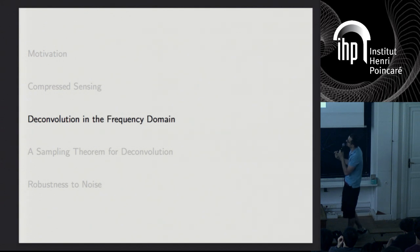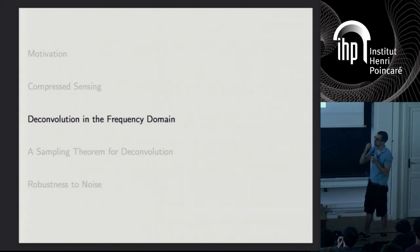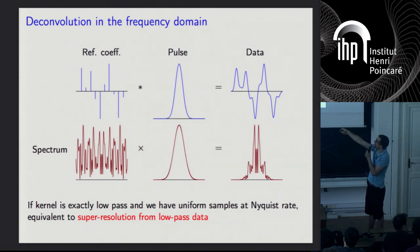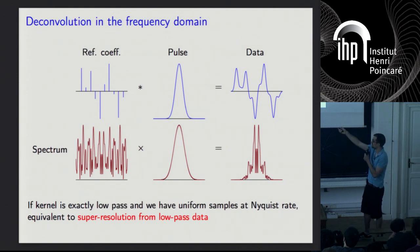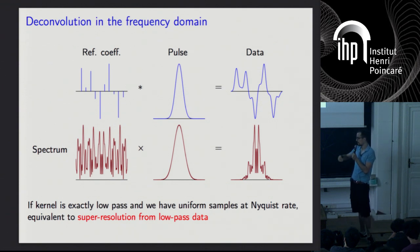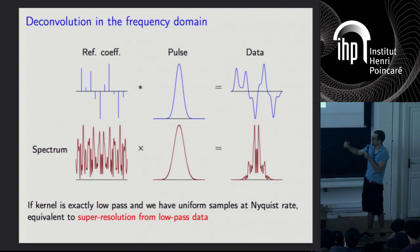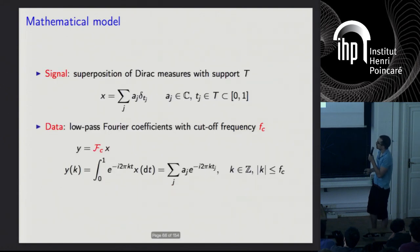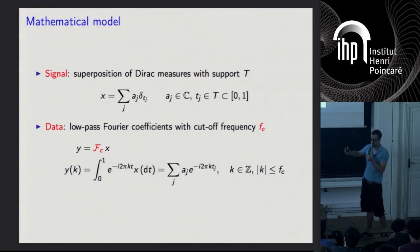Now we go back to the convolution problem. We're going to look at a simplified version where we assume the convolution kernel is exactly low-pass — which is not the case for the Ricker wavelet or strictly the Gaussian. If the kernel is exactly low-pass and we sample at the Nyquist rate, this is equivalent to having the whole low-pass spectrum of the signal. So we can replace the kernel by a sinc, and assume we have the low-pass Fourier coefficients up to a certain cutoff frequency.